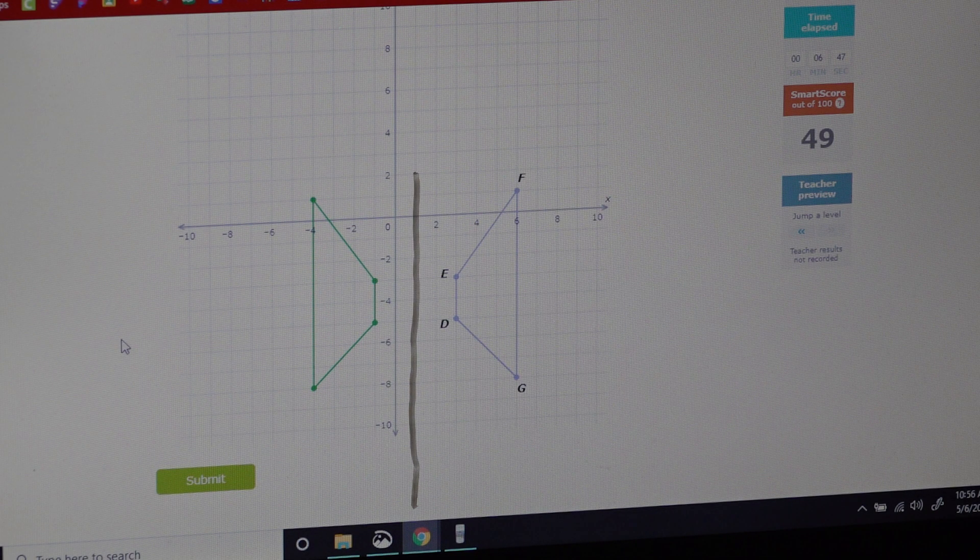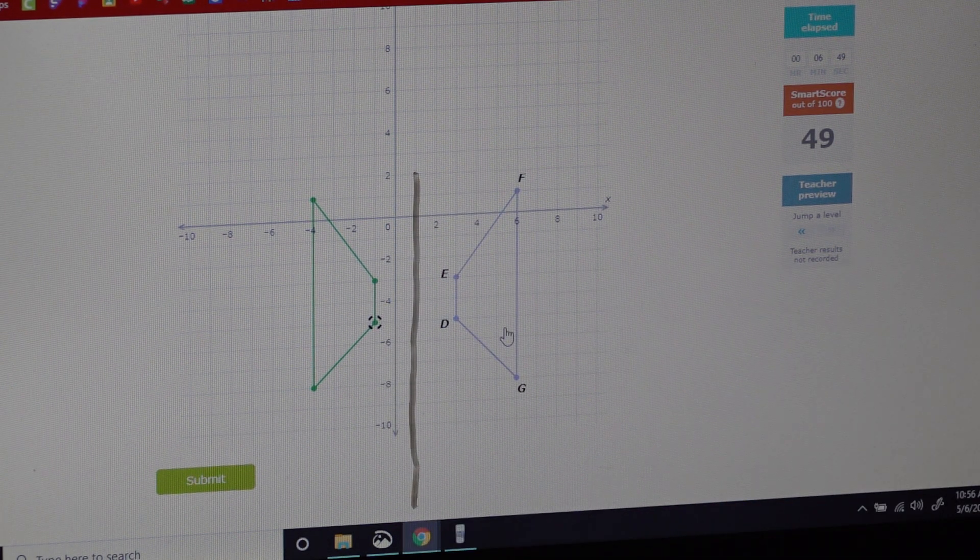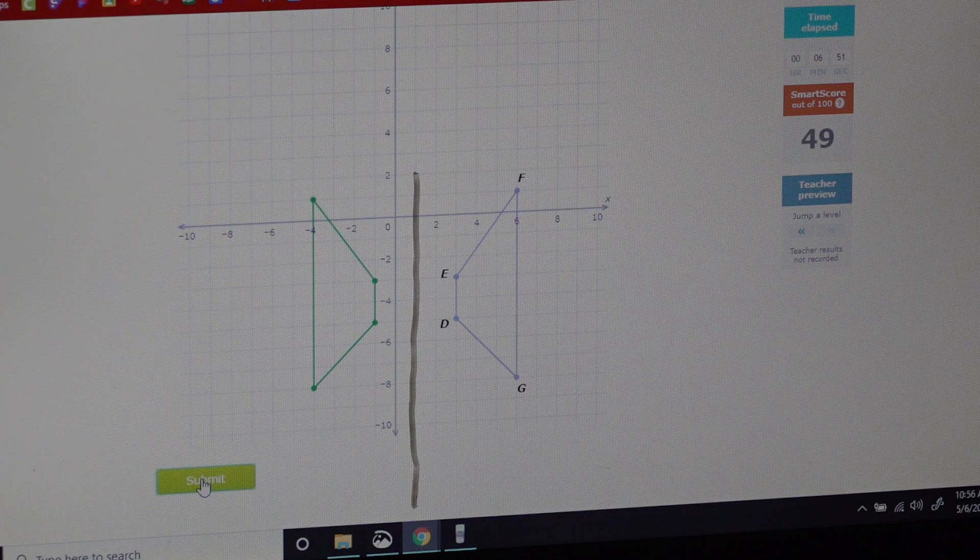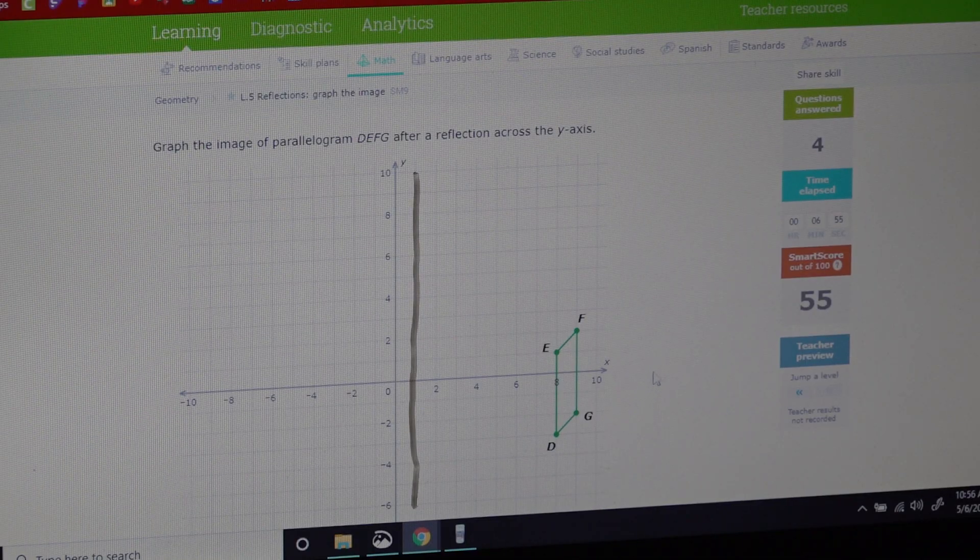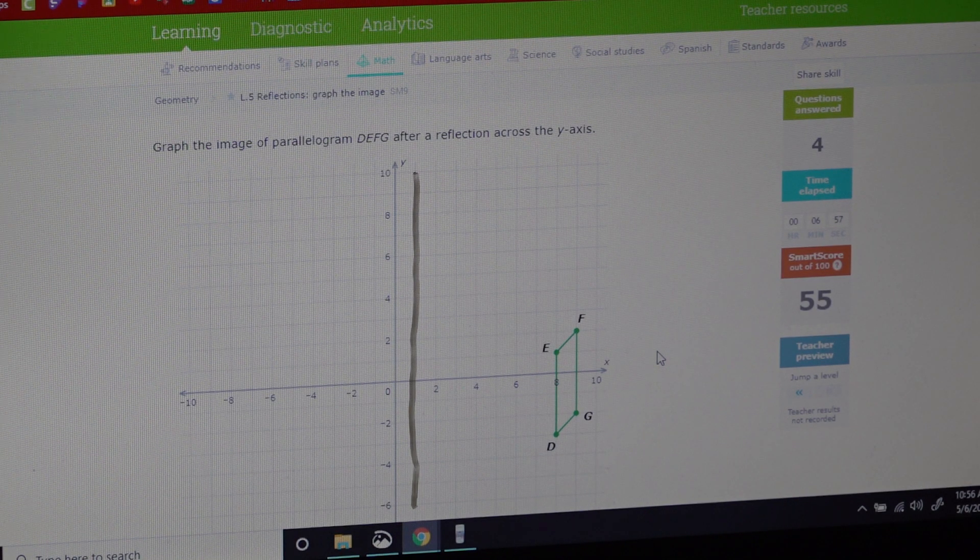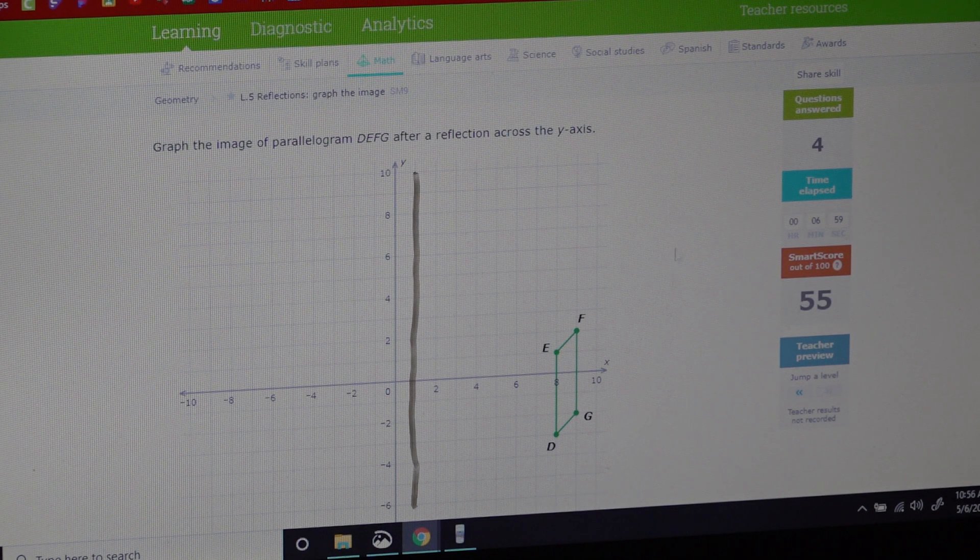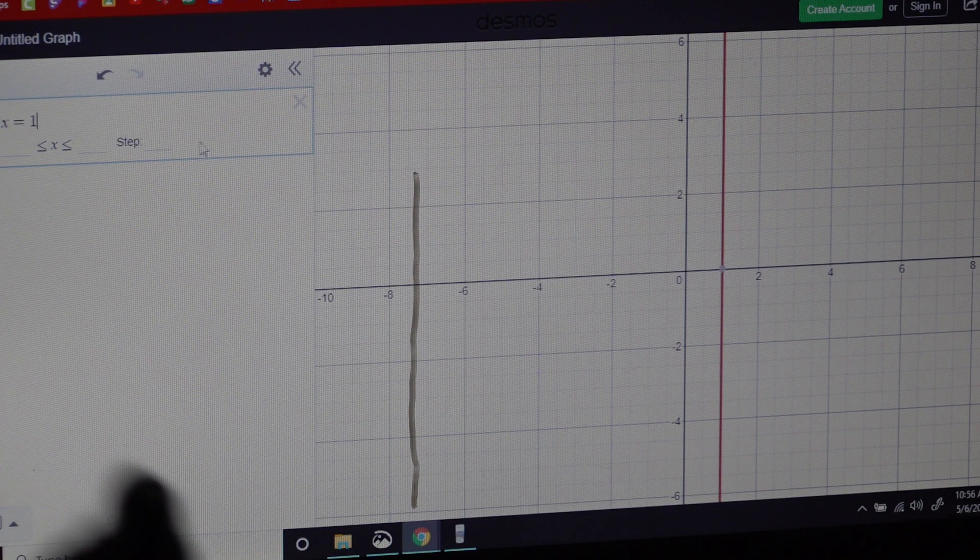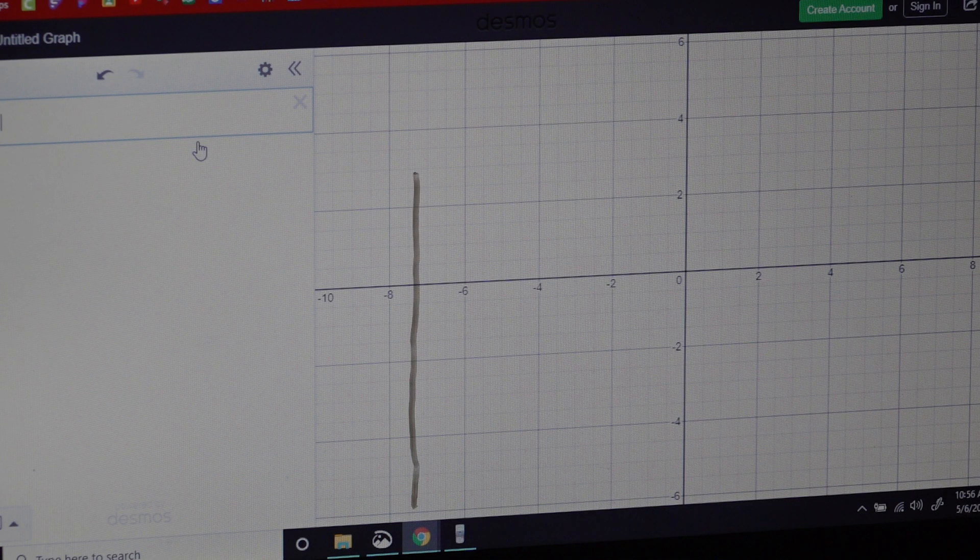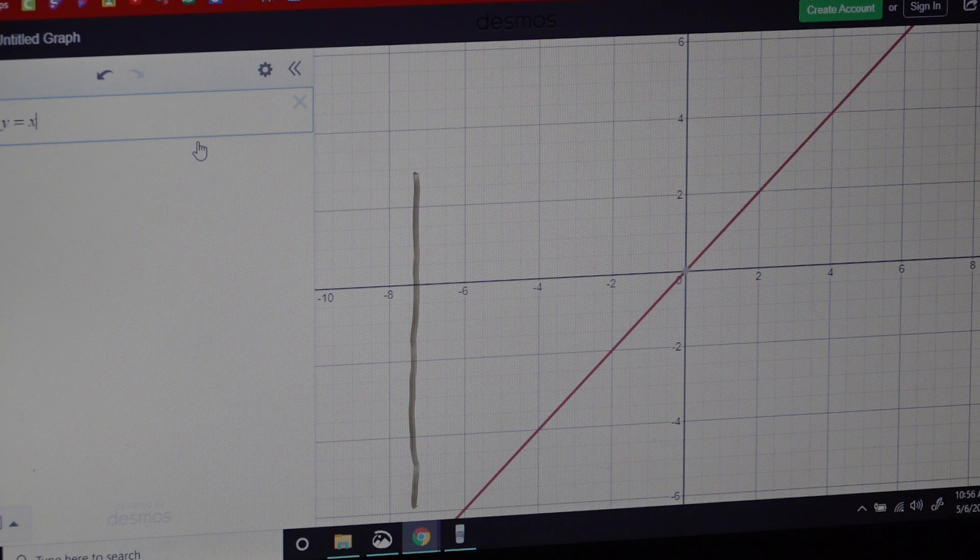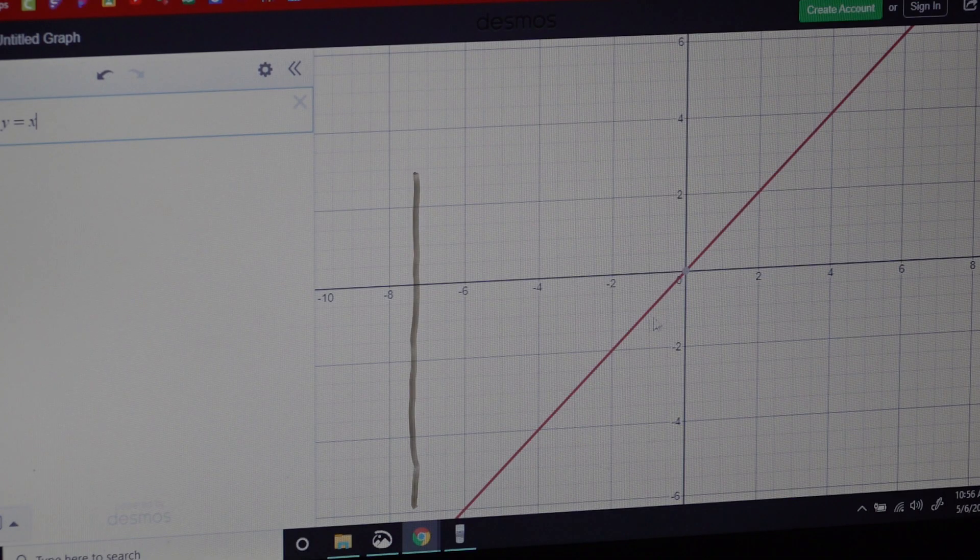Submit. Okay, there you go. Again, use Desmos if there's an equation. For example, you might have one that looks like this: y equals x. See where that line is?